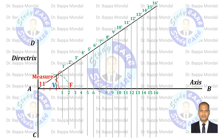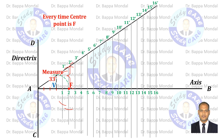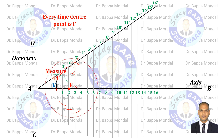Now measure distance 1 to 1' with the compass and cut the line 1-1' making center point as F. Then measure 2 to 2' with the compass and cut the line 2-2' making center point as F. Then measure 3 to 3' distance with the compass and cut the line 3-3' making center point as F. Similarly, continue for every line — measure the respective point distance and cut the respective line.